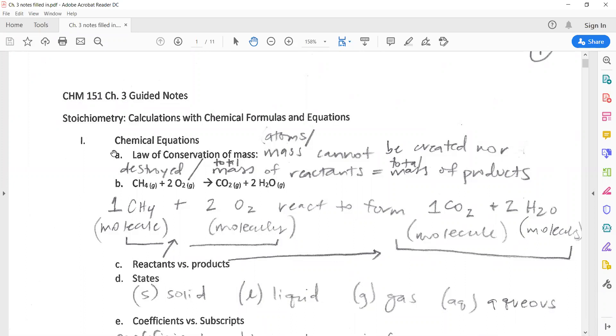First let's understand a chemical equation. We have reactants at the beginning of a chemical equation and products at the end, so the starting and ending substances. One thing we know to be true is the law of conservation of mass. What that tells us is that atoms and mass cannot be created nor destroyed, and so the total mass of the reactants is equal to the total mass of the products because the same number of atoms are still present at the beginning and at the end.